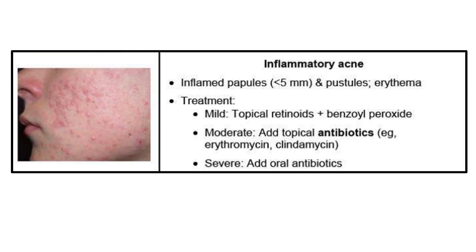Inflammatory acne is the second type. It has inflamed papules and pustules, but lesions are less than 5 mm. We divide it into mild, moderate, and severe. For mild, we give topical retinoids and benzoyl peroxide — the same as comedonal acne. For moderate, we add a topical antibiotic: erythromycin or clindamycin. For severe, we add oral antibiotics.